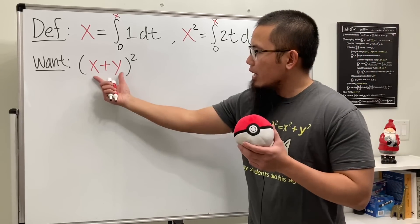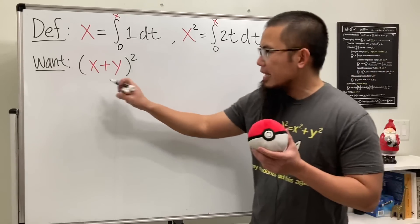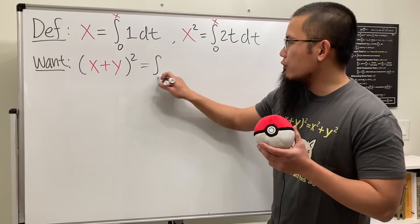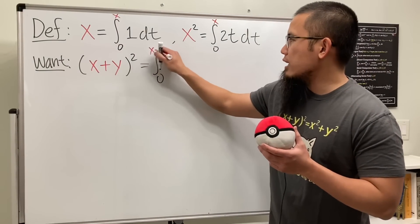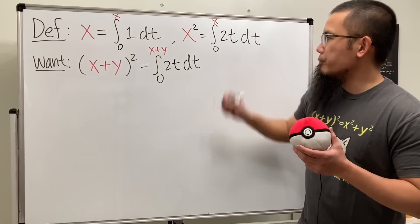So as we can see, we have this square. So we will have to use this definition, meaning that we will first get the integral going from 0 to the inside, which is x+y, and then we have the 2t dt. Good.